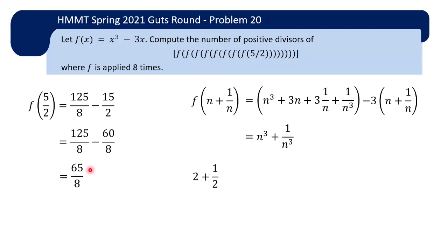So now the problem is basically done because now you notice that 2 plus half becomes 2 cubed plus 1 over 2 cubed and you repeat this 7 more times and then you get 2 to the power of 3 to the power of 8 plus 1 over 2 to the power of 3 to the power of 8. So if you take the floor function, you basically just have 2 to the power of 6561 and therefore the number of positive divisors is 6562.